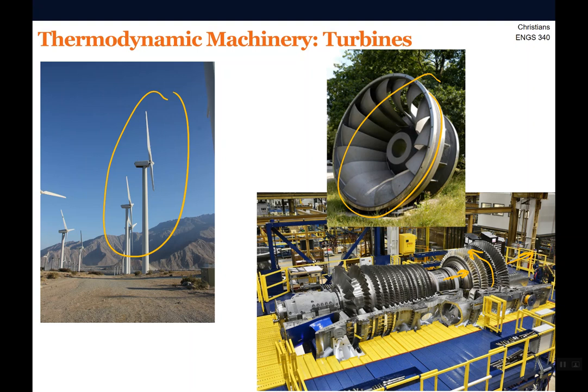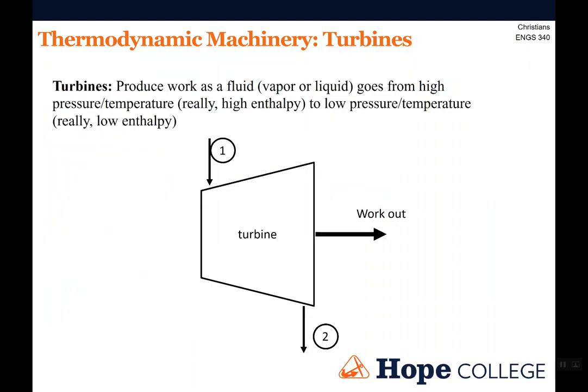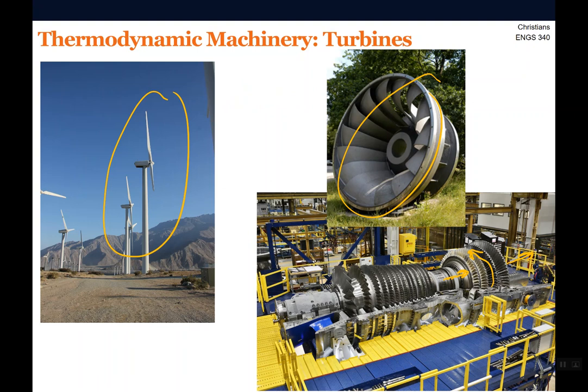Gas is flowing over these blades, spinning it like a fan and allowing us to get work out of it — the same basic principle for the other systems. This is how we typically draw a turbine: just a trapezoid. We have stuff coming in the small side because it's coming in at high pressure, and exiting the large side — coming in the small side here and exiting out at the large side.